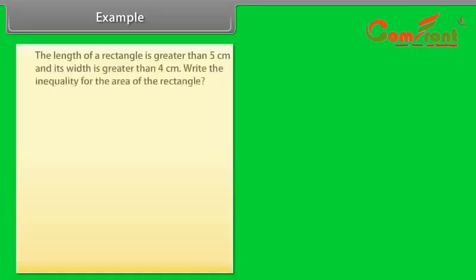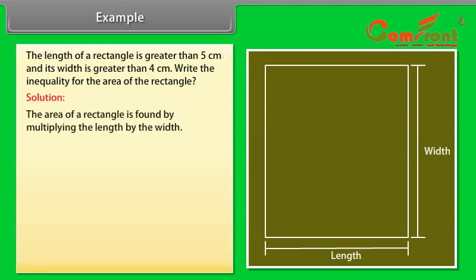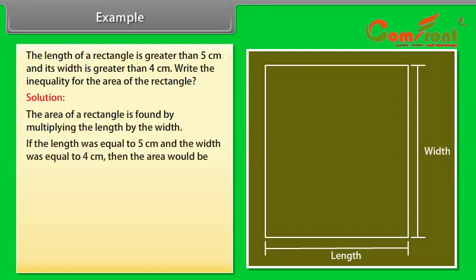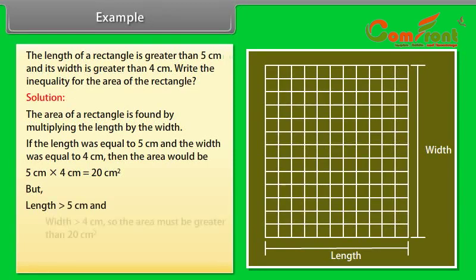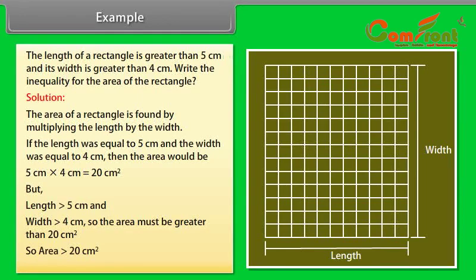Example: The length of a rectangle is greater than 5 cm and its width is greater than 4 cm. Write the inequality for the area of the rectangle. Solution: The area of a rectangle is found by multiplying the length by the width. If the length was equal to 5 cm and the width was equal to 4 cm, then the area would be 5 cm into 4 cm equal to 20 cm². But the length is greater than 5 cm and the width is greater than 4 cm, so the area is greater than 20 cm².